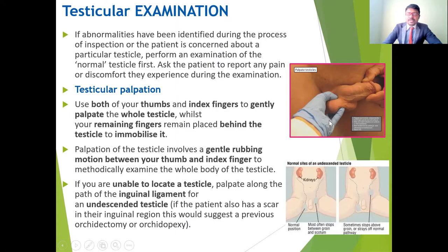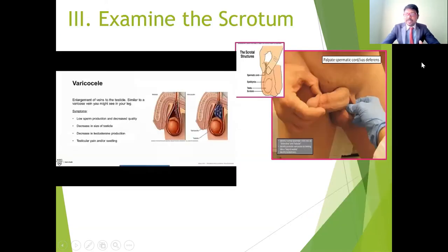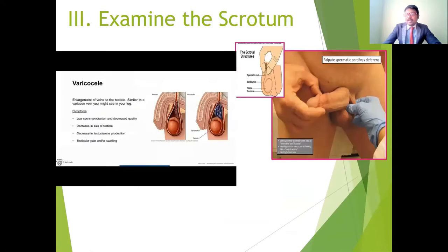In undescended testicles, they may be found in the lower abdomen or groin — the inguinal region — because they have not descended into the scrotal region. We need to identify whether the testes are in the scrotum, groin, or abdominal region. The testicle may stop in the groin due to abnormal pathways. This condition is associated with congenital abnormalities.